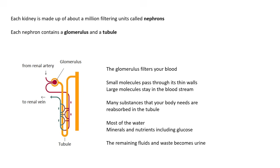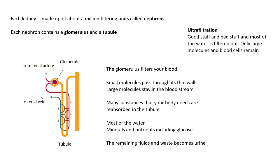Most of the water is reabsorbed, and minerals and nutrients including glucose are reabsorbed. Then what's left over — the remaining fluids and all the waste, such as urea — becomes urine. This is called ultrafiltration, because good stuff and bad stuff is removed. Most of the water is also filtered out. Only large molecules and blood cells remain.